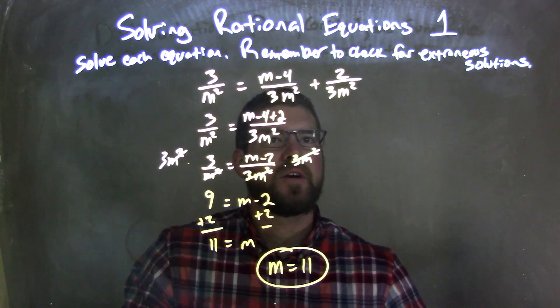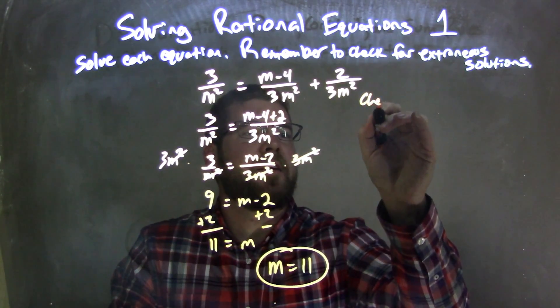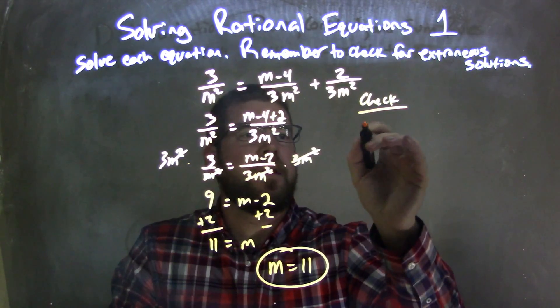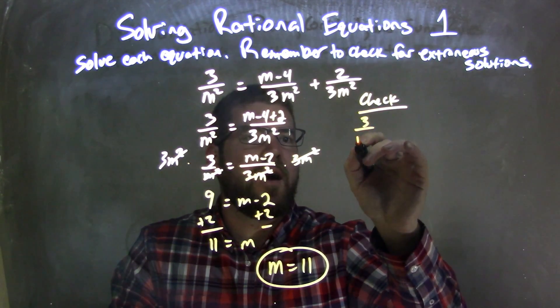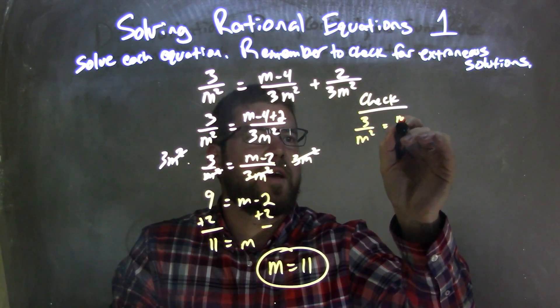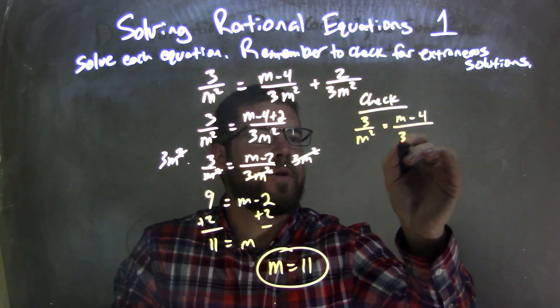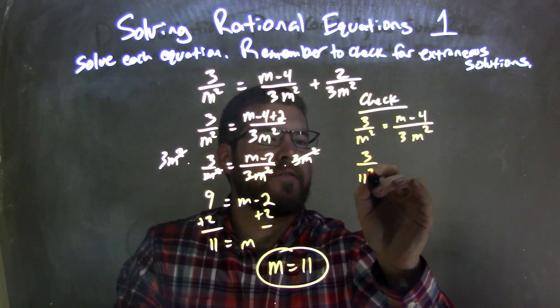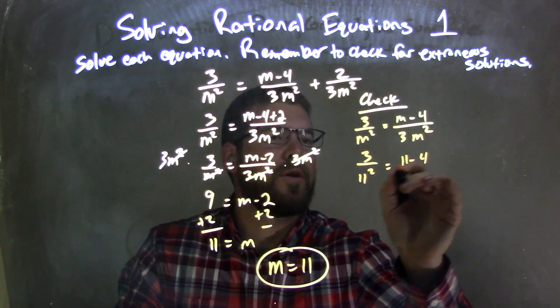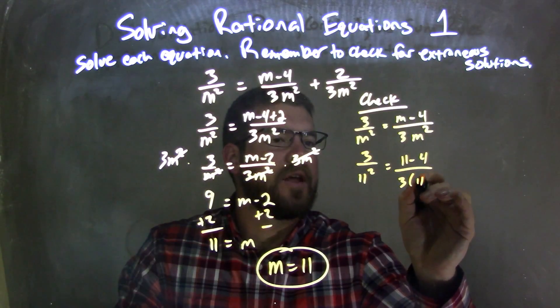But we need to check it now. Check for our extraneous solution. I'm going to rewrite the whole equation: 3 over m squared equals m minus 4 over 3m squared. Let's plug 11 in for m. 3 over 11 squared equals 11 minus 4 over 3 times 11 squared.